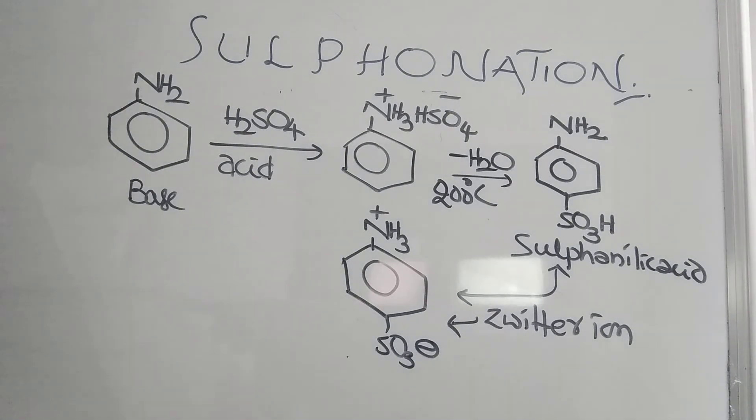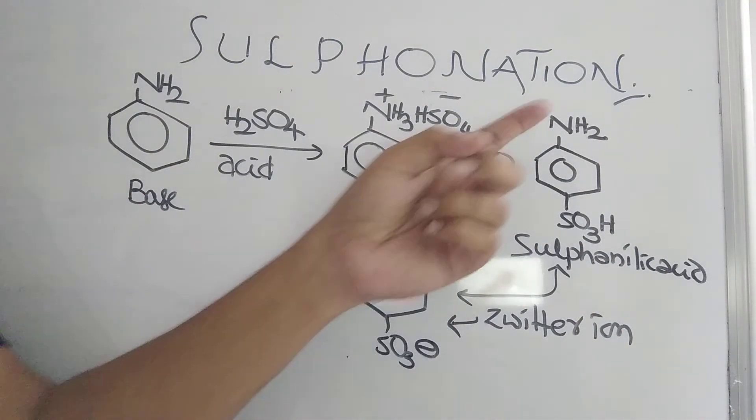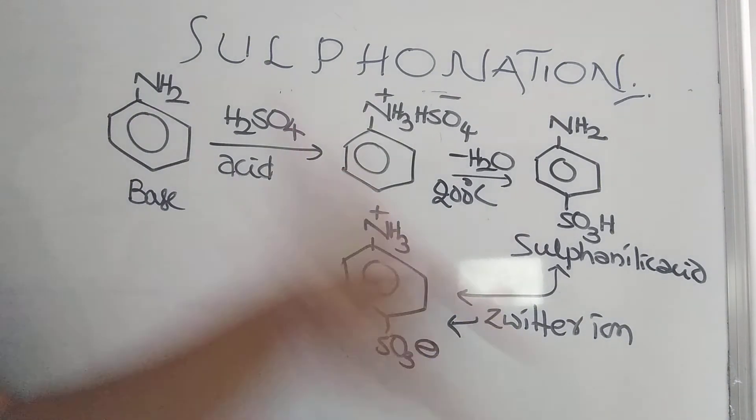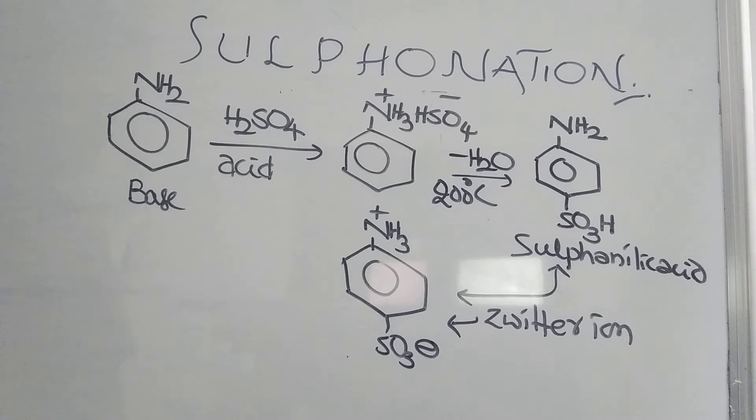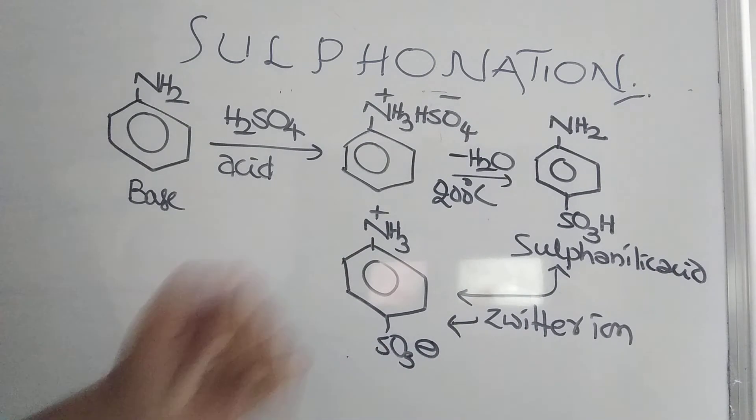What is the meaning of zwitterion? Due to the transfer of proton within the molecule. When an acid is present, this is acid, this is base. If in the same molecule, acid and base both are present and a proton is shifting from acid to base in one molecule only, within the molecule, then you can call that zwitterion. This is zwitterion. Proton transfer from here to here. So, SO3- and NH3+. Zwitterion is found.